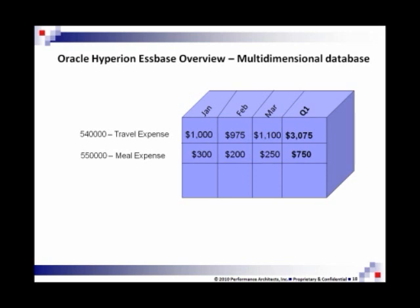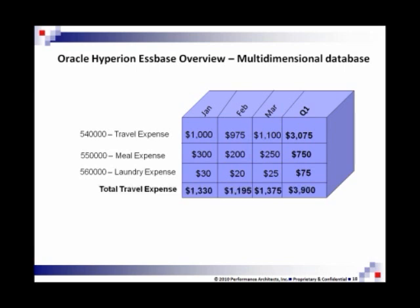Adding meals — $750 — and laundry expense — $75. Look at that: they all add up. My travel, meal, and laundry expenses add up to my total travel expenses. January $1,330, February, March — $3,900 for my total first quarter travel expenses. So you might look at that and say, yeah, that's an Excel spreadsheet — I've got rows and columns. Big deal.